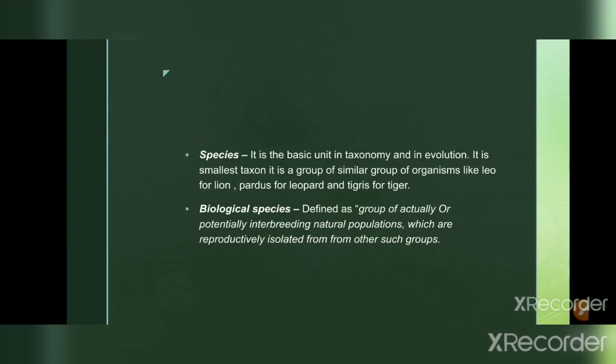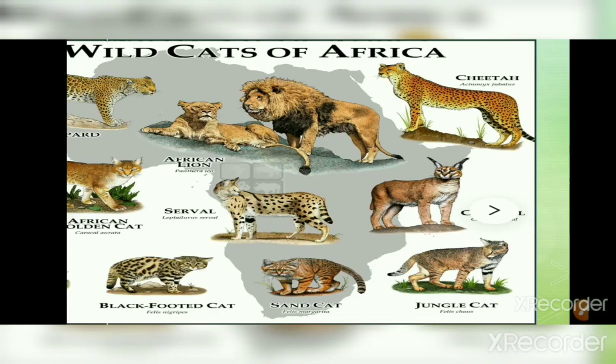Species can be further classified into biological species. The definition of biological species is: a group of actual or potential interbreeding natural populations that are reproductively isolated from other such groups. These are organisms that can interbreed to produce offspring and differ from other species.